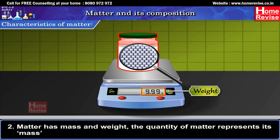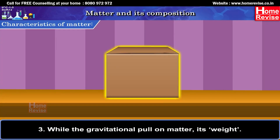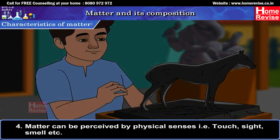The quantity of matter represents its mass, while the gravitational pull on matter represents its weight.